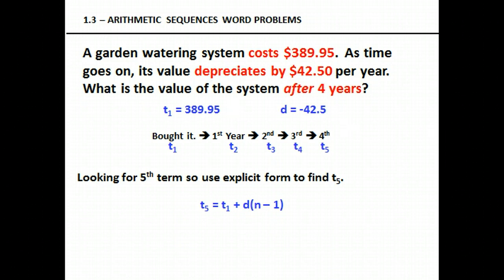It's going to depreciate by $42.50 a year. Depreciate means it's going to lose value, so our d is going to be negative $42.50. And our initial cost is going to be our first term, t sub 1 or u sub 1.